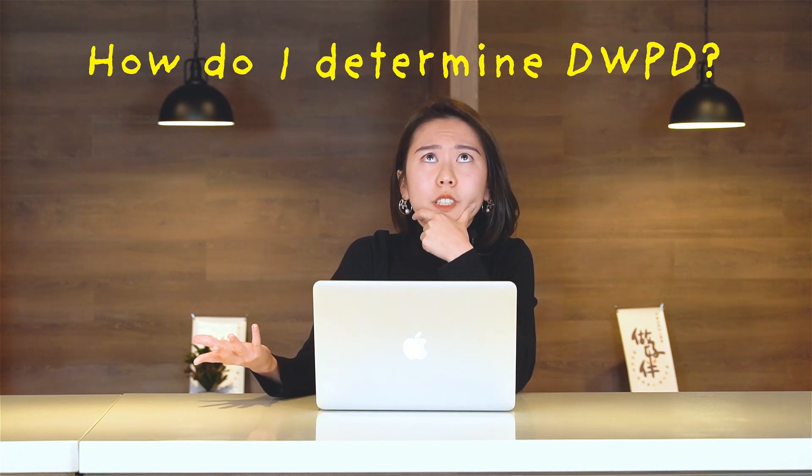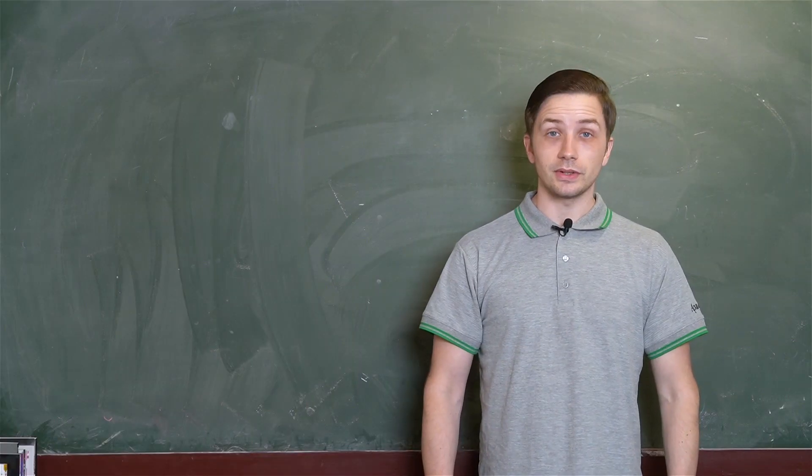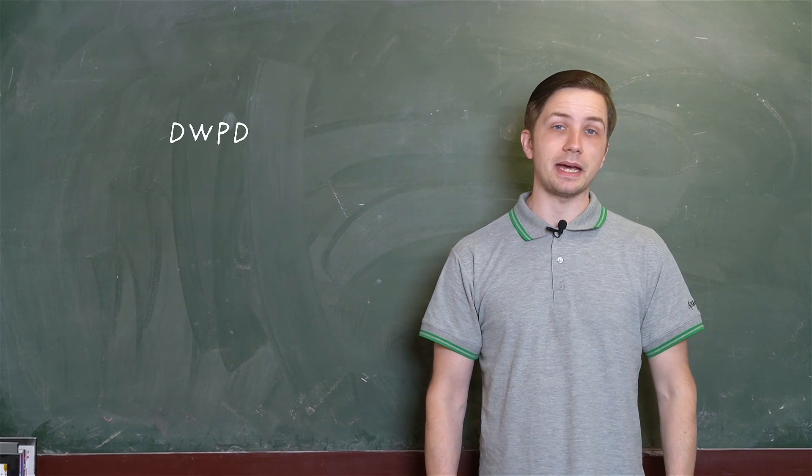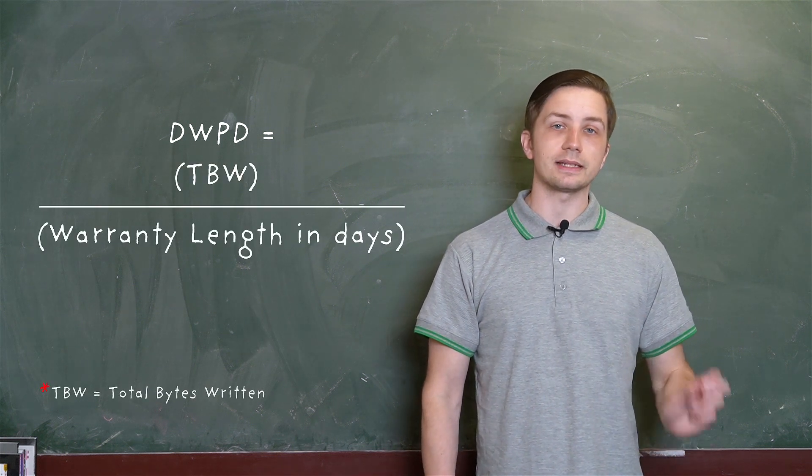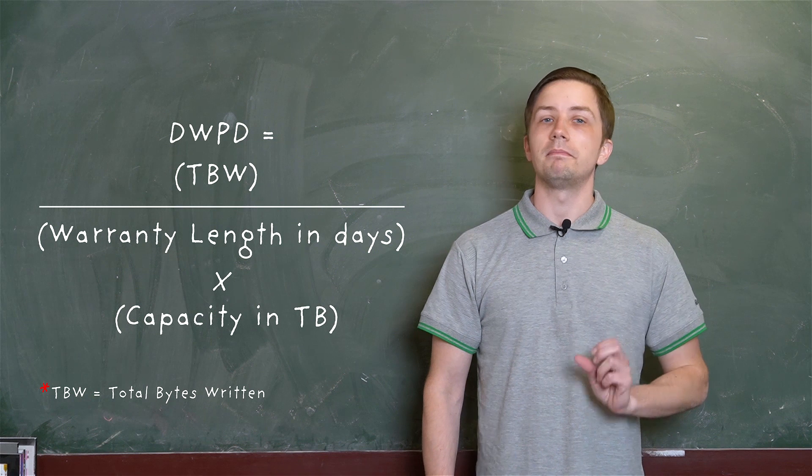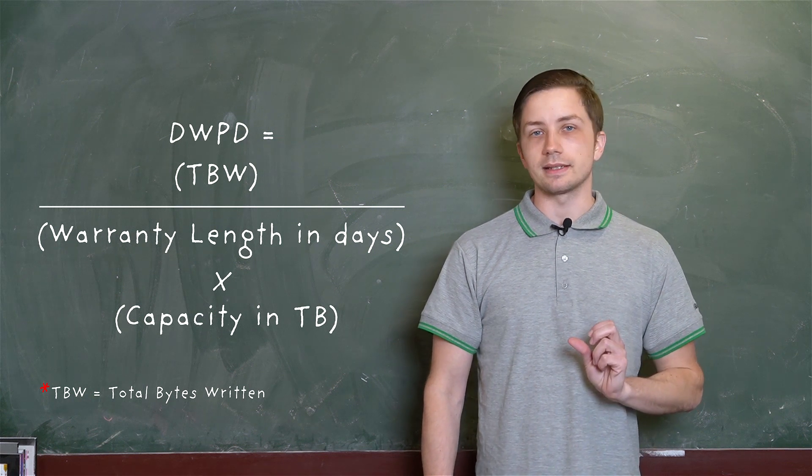How do I determine DWPD? To determine DWPD, we take the capacity of the SSD in terabytes, then we divide it by the number of days in the warranty multiplied by the capacity of the SSD again.